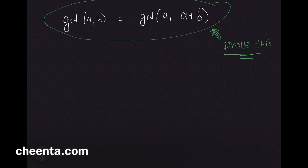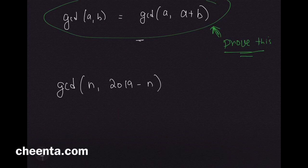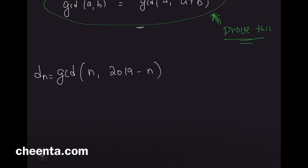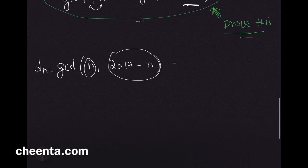This result can be proven very easily from fundamental principles. We are interested in GCD(n, 2019 minus n). This is d_n. The major step is: GCD(n, 2019 minus n) = GCD(n, (2019 minus n) + n).